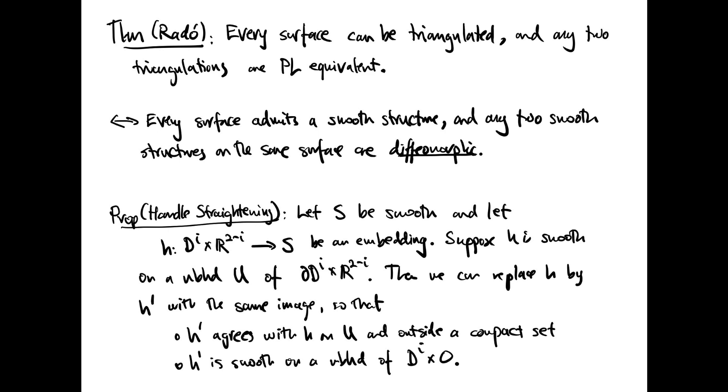One way to prove this is by handle straightening. Handle straightening says the following. Suppose we have a smooth surface S and suppose we have an i handle in S. This means a map from the closed i dimensional disk times R^(2-i) into S, that's the i handle, which is an embedding.